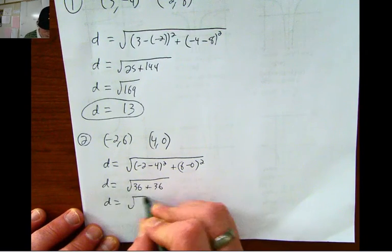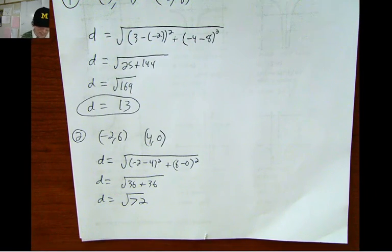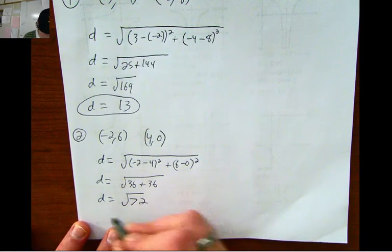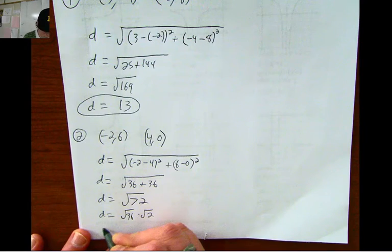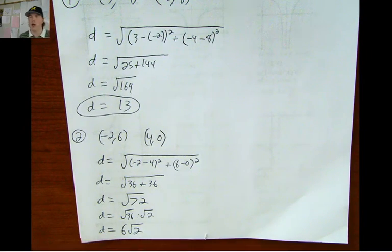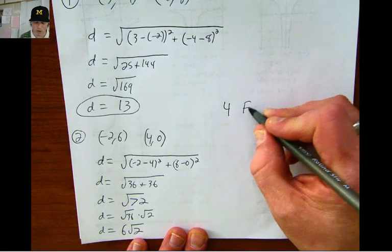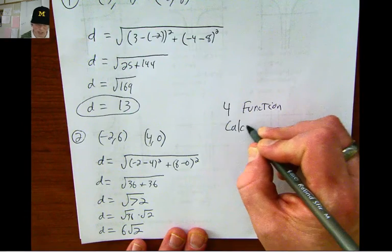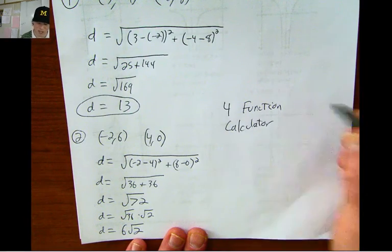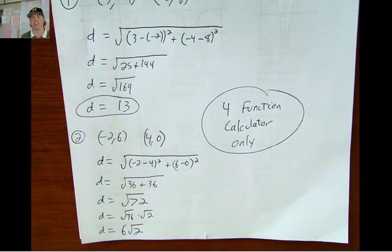This becomes square root of 72. I don't know the square root of 72 exactly, but I do know how to simplify that. This can become square root 36 times square root of 2, which becomes 6 square root 2.